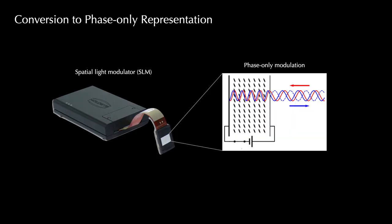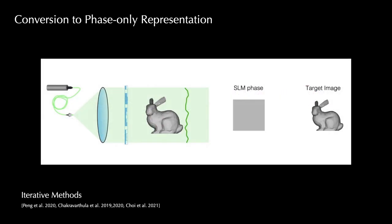To display a hologram, most existing liquid-crystal-based spatial light modulators can only modulate the phase of the incident light, so we have to further convert the complex-valued hologram into a phase-only representation.